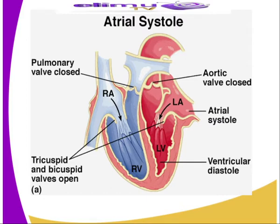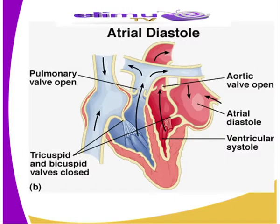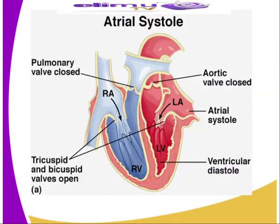This marks the end of a cardiac cycle, when the whole heart gets into a brief cardiac diastole and the cycle starts all over again. As you can see from our diagram, we have the atrial diastole and also the atrial systole representing the atria or the auricles. We still have the ventricular systoles and also ventricular diastoles.